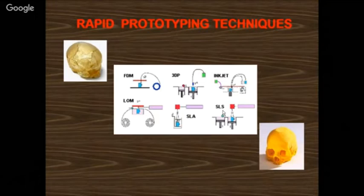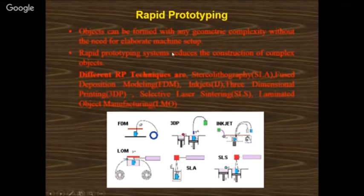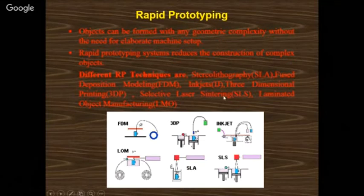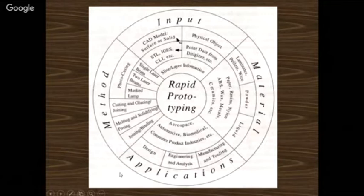The main thing is the input data required is a CAD model. You take the material and pour it into the RPT machine — it will scan layer by layer and generate a prototype. Objects can be formed with any geometric complexity without the need for elaborate machine setup. If you want very geometric complexity products, you can approach RPT. The rapid prototyping system reduces the construction of complex objects. Different RPT techniques include SLA Stereolithography, Fused Deposition Modeling, Inkjet, 3D Printing, Selective Laser Sintering, and Laminated Object Manufacturing.